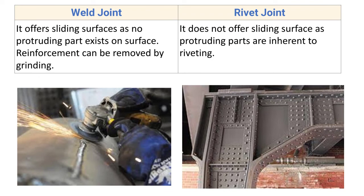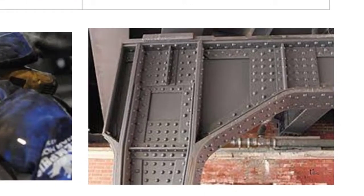Riveted joint does not offer a sliding surface as protruding parts are inherent to riveting. The rivet consists of a head and shank end, and due to this it cannot be used for applications where sliding motion is required.